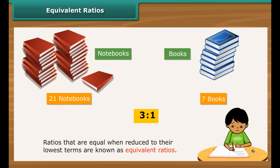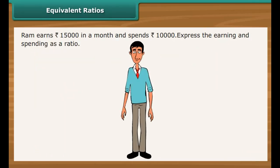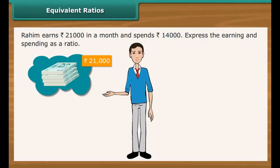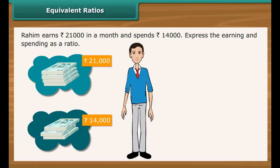Let us verify whether the following ratios are equivalent. Ram earns Rs. 15,000 in a month and spends Rs. 10,000. The ratio 15,000 by 10,000 reduces to 3 by 2, or 3 is to 2 — meaning out of every 3 rupees earned, Ram spends 2. Rahim earns Rs. 21,000 and spends Rs. 14,000. The ratio 21,000 by 14,000 also reduces to 3 by 2, or 3 is to 2. The ratios for earning to spending for Ram and Rahim are equivalent.